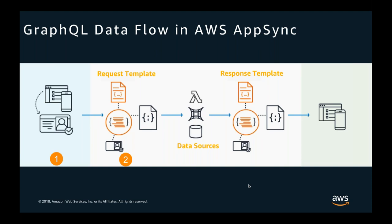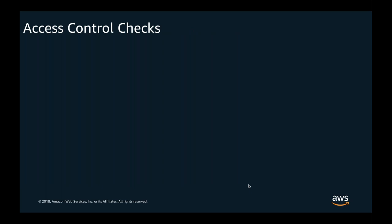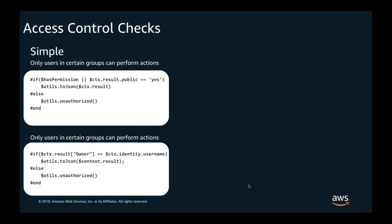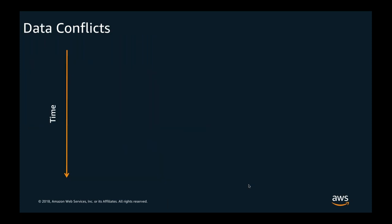The enriched, modified, and validated request then reaches the data source to perform the operation. After the operation takes place in the data source, you can also have a response template to modify the data on the way back to the client. Mapping templates also allow a very important capability: fine-grained access control. When the user is authenticated by a Cognito User Pool or an external OpenID Connect provider, a JWT token is sent to AppSync with the request. You can add conditional checks in the request mapping template to authorize access based on different requirements before the operation is executed at the data source. You can have simple checks where only users in certain groups can perform actions using an if-else statement, or advanced scenarios with additional logic where only specific users or groups can perform actions.